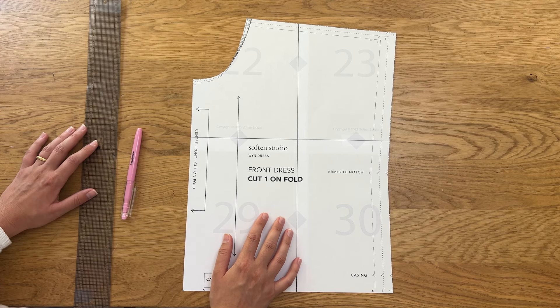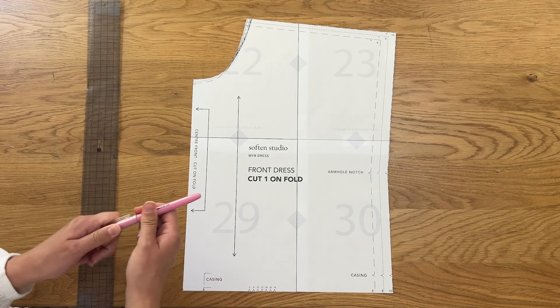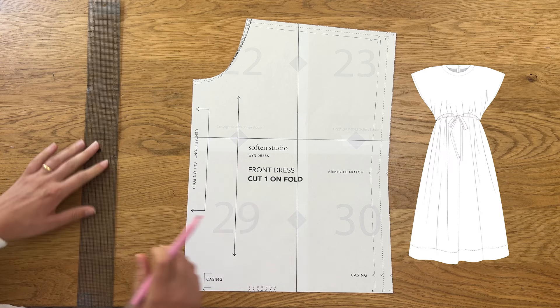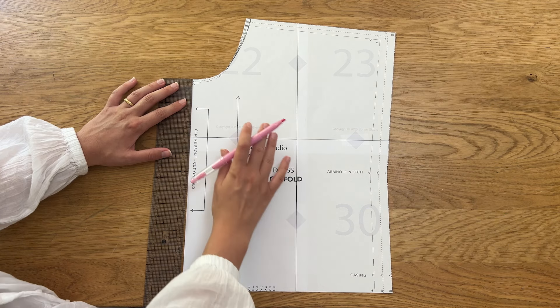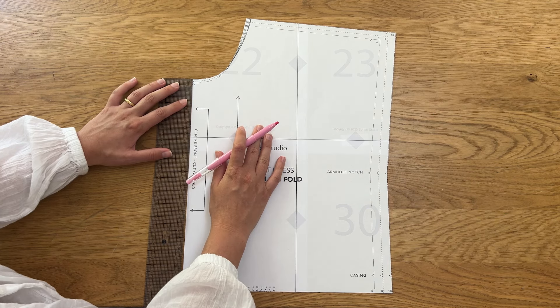Hi everyone, today I'm going to be doing a tutorial of how I hacked the wind dress from its original round neckline into a v-neckline. It's a really simple hack and it gives another option for how to make and wear the wind dress.